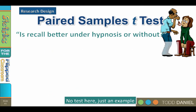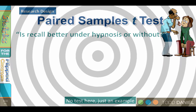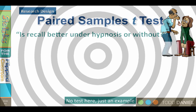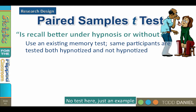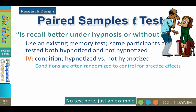Let's review the research design for a paired samples t-test. Our research question is: is recall better under hypnosis or without? We test whether people will recall events better under hypnosis. We start with an existing memory test standardized on people who are not under hypnosis. We randomly select participants, and then randomly assign people to recall a list of words without hypnosis — and then the same people are tested again under hypnosis. The independent variable is condition: with versus without hypnosis.